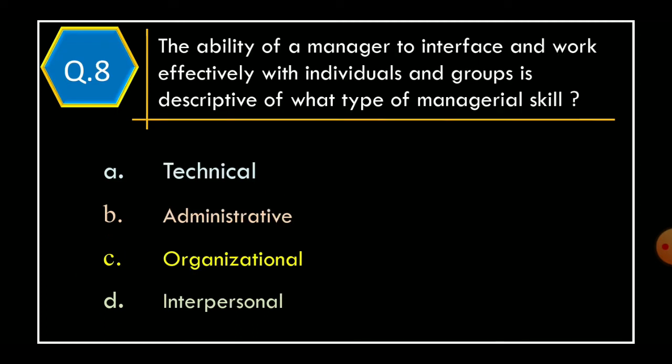Question 8. The ability of a manager to interface and work effectively with individuals and groups is descriptive of what type of managerial skill? Option A: Technical. Option B: Administrative. Option C: Organizational. Option D: Interpersonal. The correct option is Option D: Interpersonal.